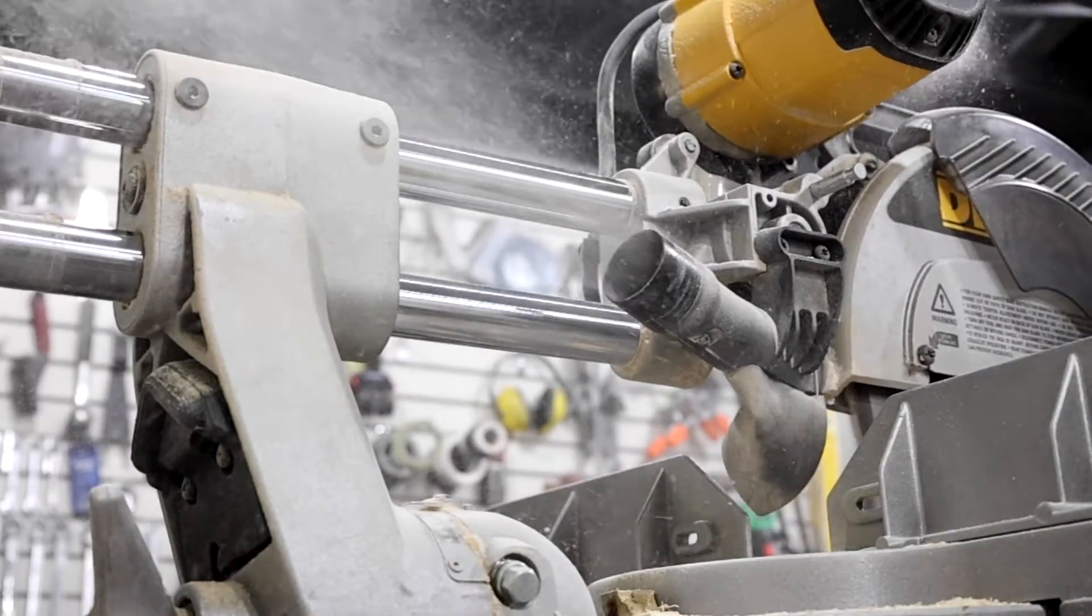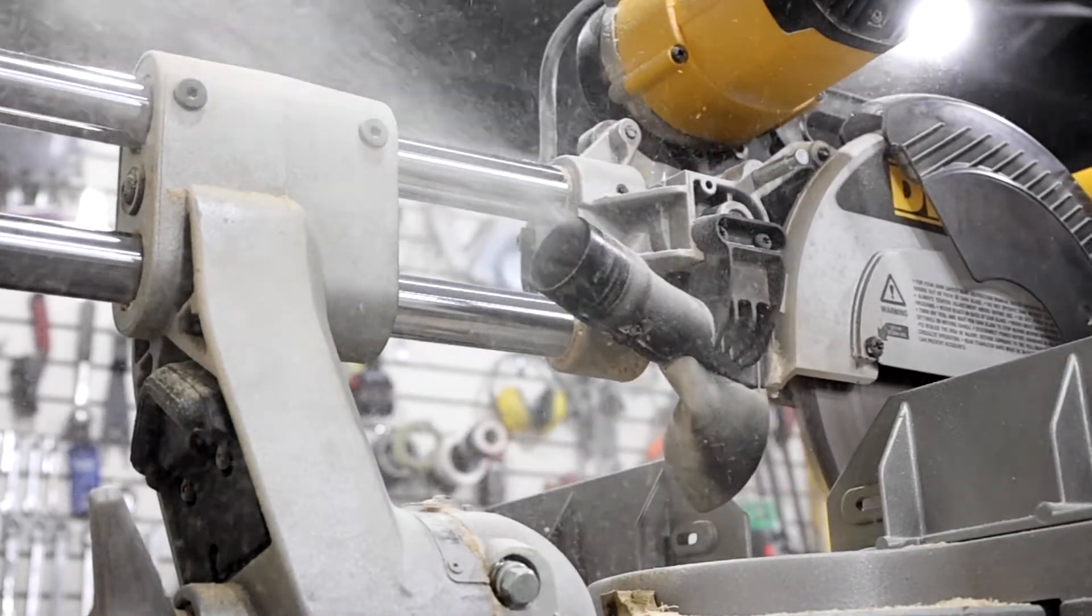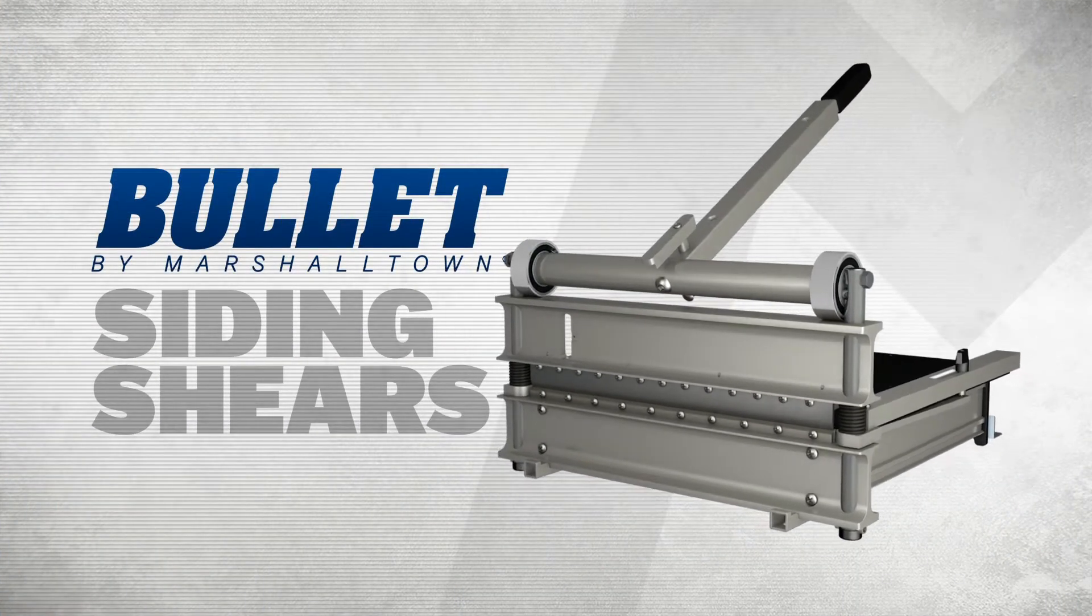Circular saws produce a lot of noise and large amounts of silica, causing the users to wear PPE. The Bullet by Marshalltown line of siding shears fixes that.